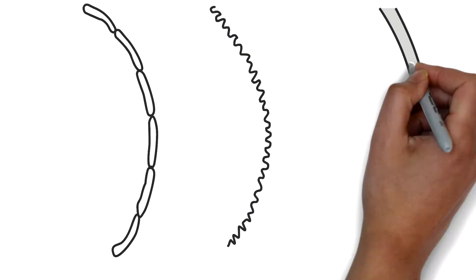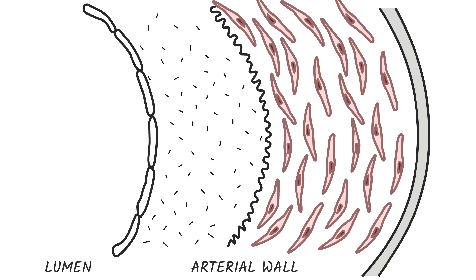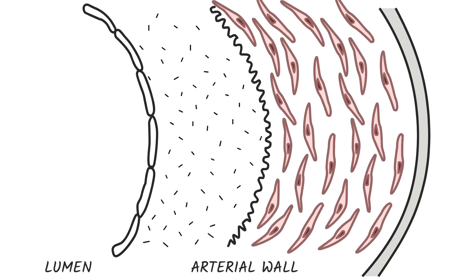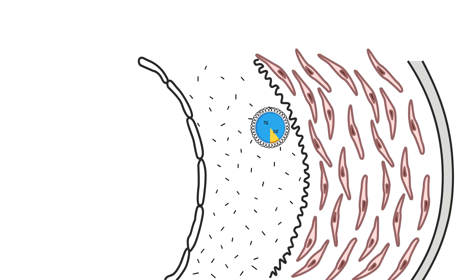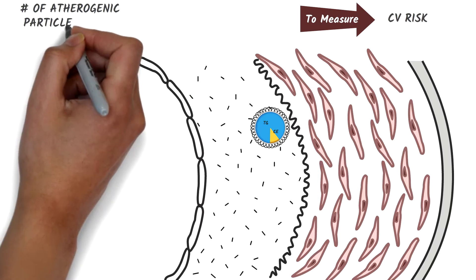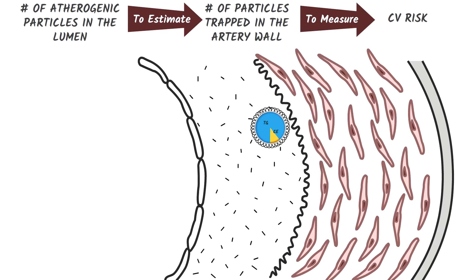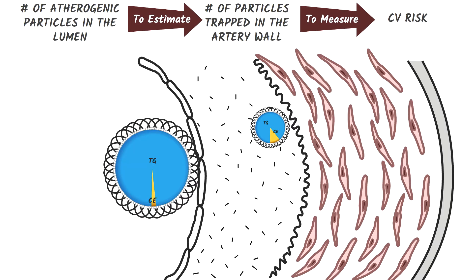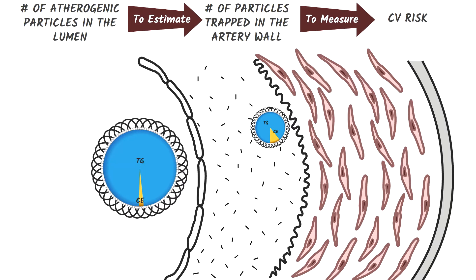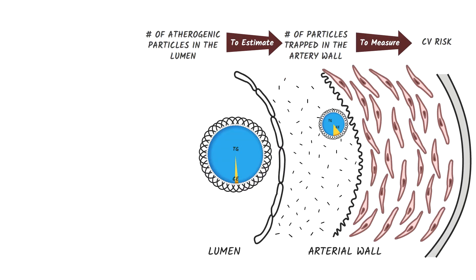Atherosclerosis happens when ApoB lipoproteins enter the arterial wall and, instead of exiting through the lymphatics and returning to the circulation, they get trapped. To measure a patient's cardiovascular risk, we need to estimate the number of atherogenic particles in the lumen of the artery, because that's the major determinant of the number of ApoB particles that will be trapped in the arterial wall. All classes of ApoB are atherogenic, except for chylomicrons, which are too large to enter.